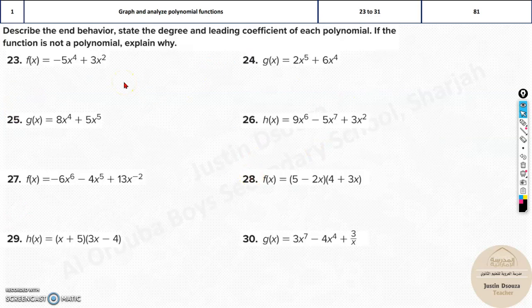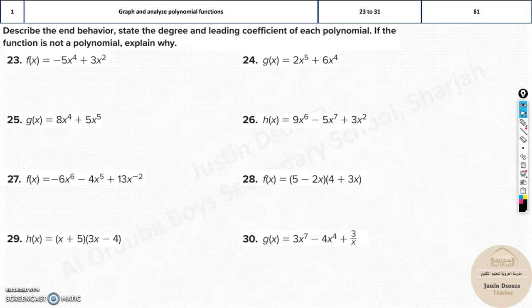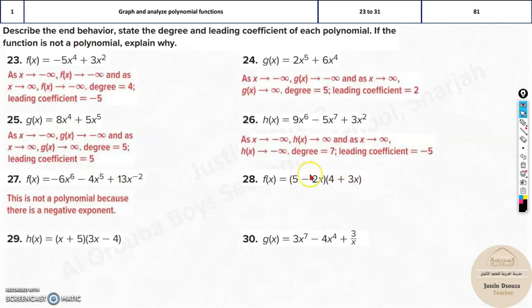Now similarly, do pause the video now. Solve them by yourselves and then check the answers. Don't directly jump to the answers. As you can see over here, let me just quickly jump through a few. Here, you can see the degree is 4. Degree is always highest power. The degree is 5 here. Degree is 7 and so on. Now, what about this? Leading coefficient in this case, the highest degree is coefficient. That is minus 5. Here, the leading coefficient would be 8 and so on.